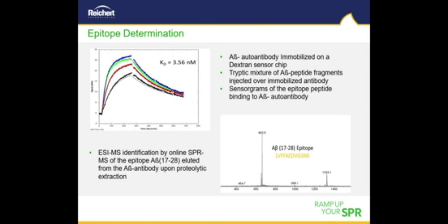Here we show one example of how the online SPR-mass spec is used for epitope identification and affinity determination of A-beta-specific antibodies related to Alzheimer's research. To identify the epitope — the part of the antigen recognized by the immune system — the A-beta autoantibody was immobilized on a dextran SPR affinity chip, and a tryptic mixture of A-beta peptide fragments was injected over it. Subsequent online desalting prior to MS was performed after elution of affinity-captured A-beta peptide, which provided identification of A-beta 17-28 as the epitope peptide. The affinity determined by SPR was 3.56 nanomolar.